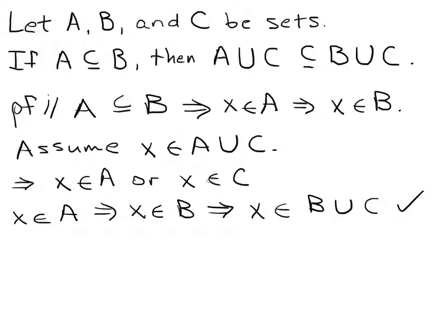Let's see what happens if X belongs to C. If X belongs to C, we know that if X belongs to set C, we can say that X belongs to the union of B and C, since X belongs to C. So that implies that X is a member of B union C.